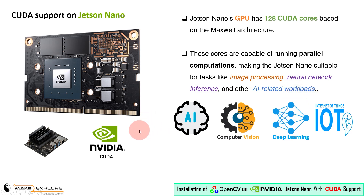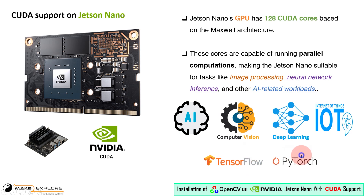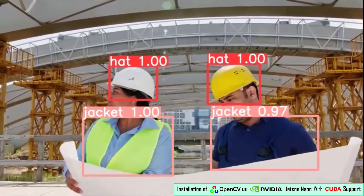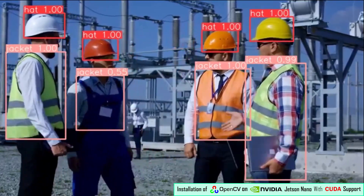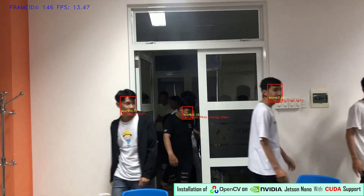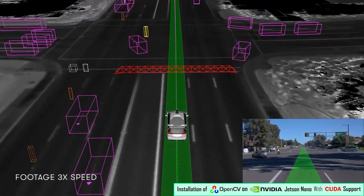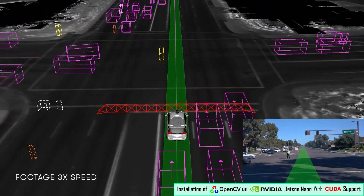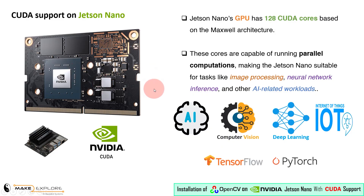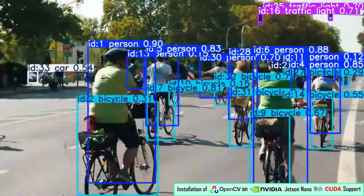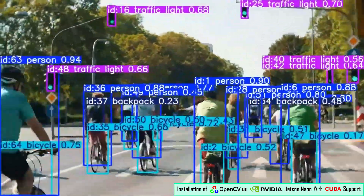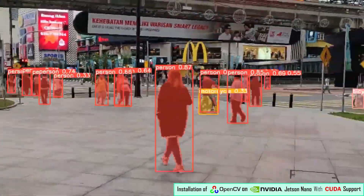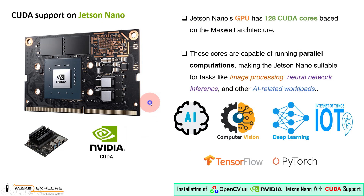Jetson Nano can run deep learning models using frameworks like TensorFlow and PyTorch with CUDA acceleration. This is useful for applications like object detection, facial recognition, and autonomous navigation in robotics. CUDA can also be used to accelerate computer vision algorithms such as image classification, segmentation, and optical flow, making the Jetson Nano ideal for real-time video processing tasks.